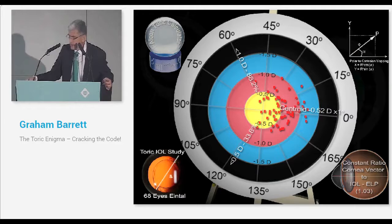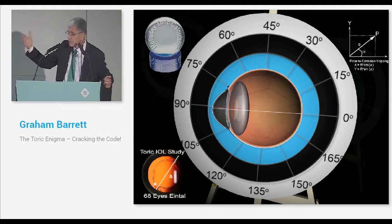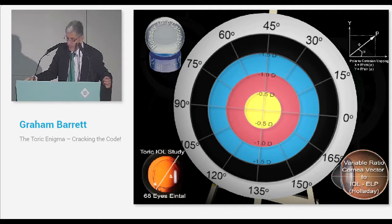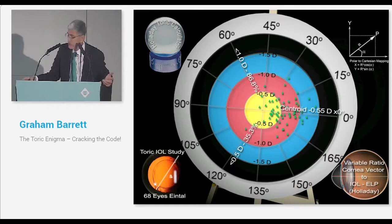The Holladay calculator does use a variable ratio. It takes into account the fact that the ELP changes in different patients, and it uses that calculated ELP in predicting your toric lens. Somewhat surprisingly, the centroid with the Holladay is very similar, 0.55 diopters. The percentage of cases within a half diopter of predicted residual astigmatism is 35%. Not that different.